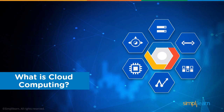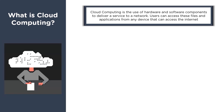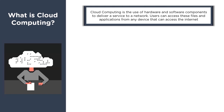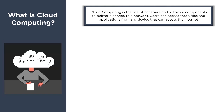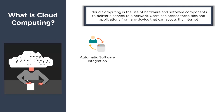When we talk about Google Cloud Platform, we also need to know what is cloud computing. Cloud computing is the use of hardware and software components to deliver a service to a network. Users can access files, applications, and services provided by a cloud provider from any device that has access to the internet. In short, cloud computing is a way where a cloud provider provides access to different services such as computing, memory, processing power, and storage.